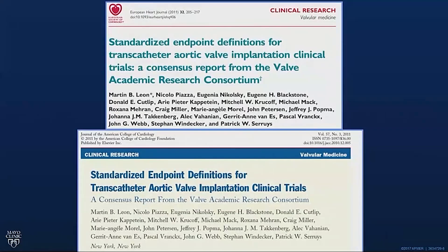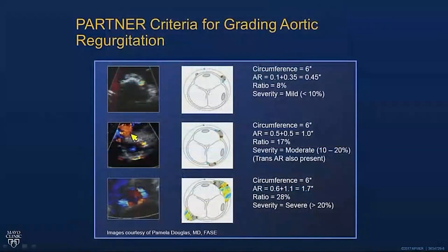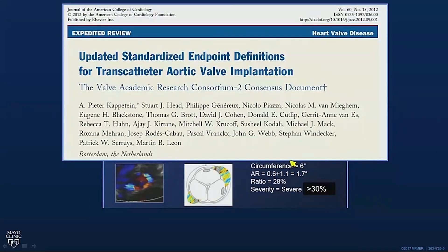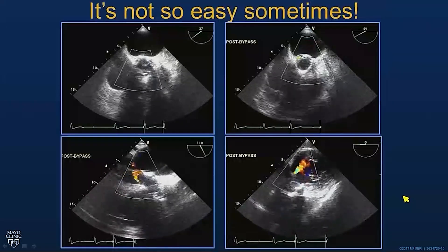There are guidelines to help us judge this. They're a little arbitrary and not really validated, but a consensus of experts called the VARC consortium developed them. The first iteration said that in the short axis view — critically, right at the level of the valve, not in the LV outflow tract and not above it — if it was less than 10% of the circumference, call it mild; more than 20%, call it severe. The VARC consortium then revised this, and the most recent guidelines say if it's more than 30% of the circumference at the level of the valve, call it severe.